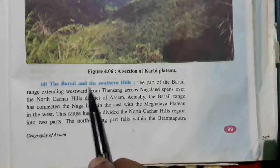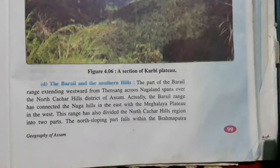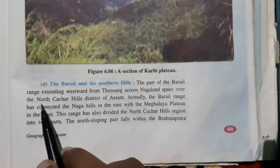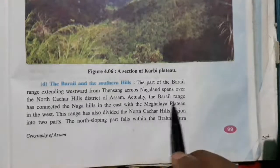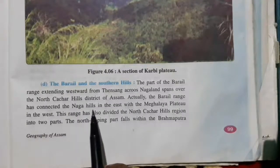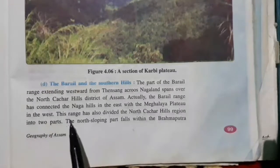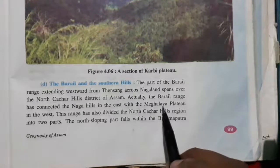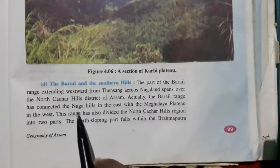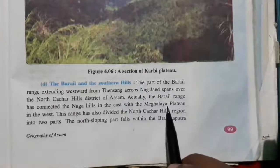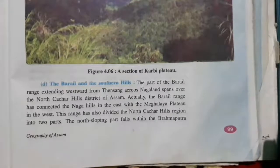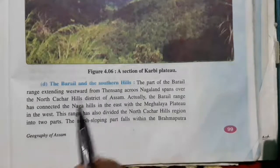The Barail and Southern Hills is the fourth physiographical division. The Barail range of mountains in Assam is found in North Kopili Hills. The Barail range has connected the Naga Hills in the east with the Meghalaya Plateau in the west. From east to west, this Barail range connects Meghalaya and Nagaland through this mountain range.